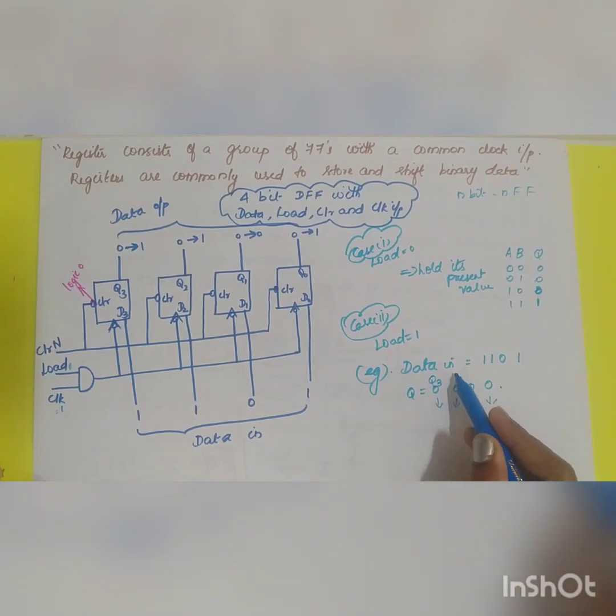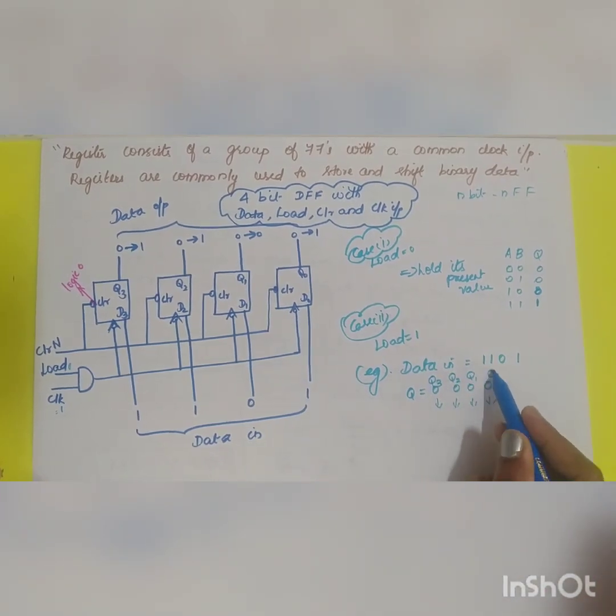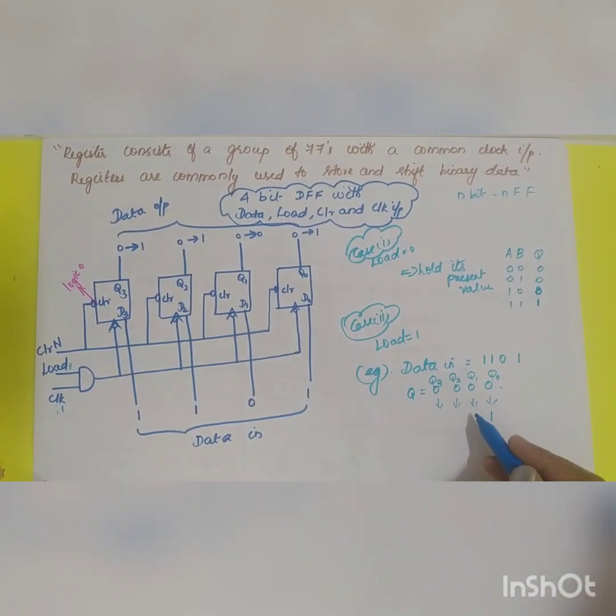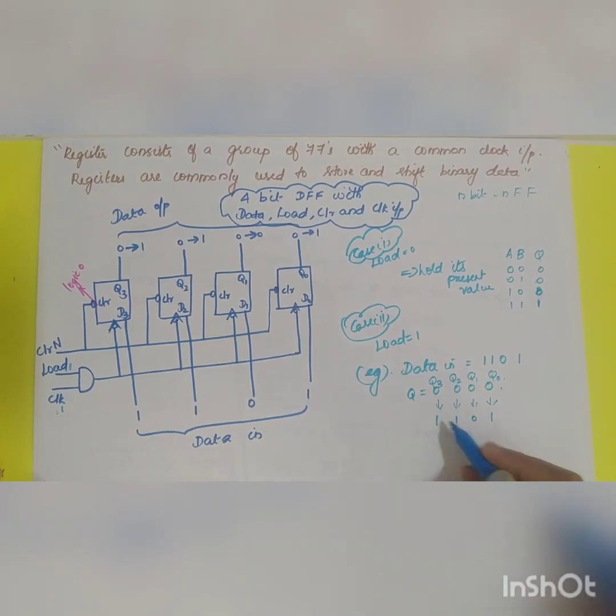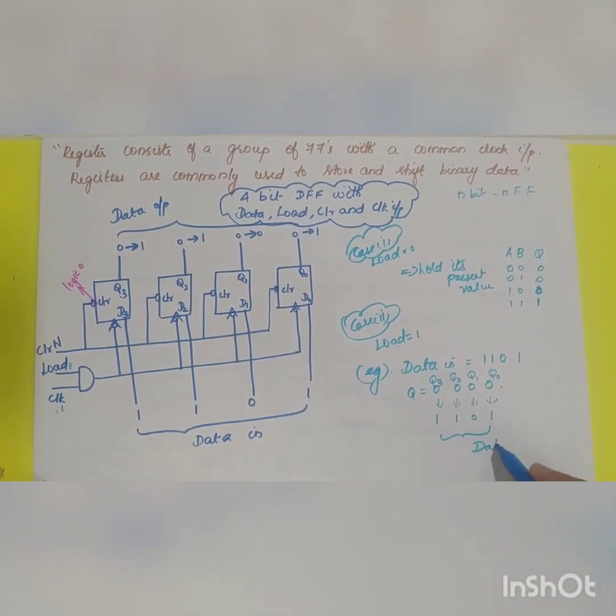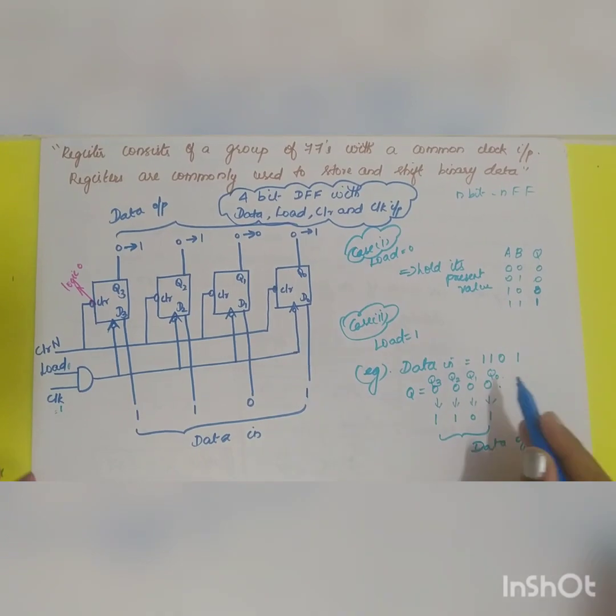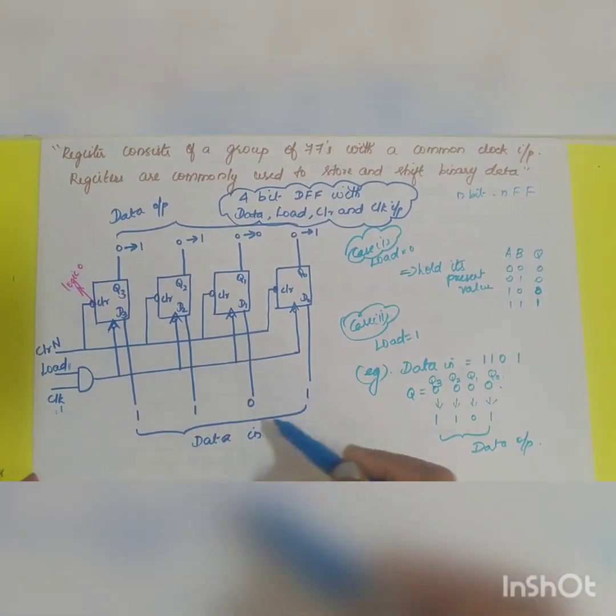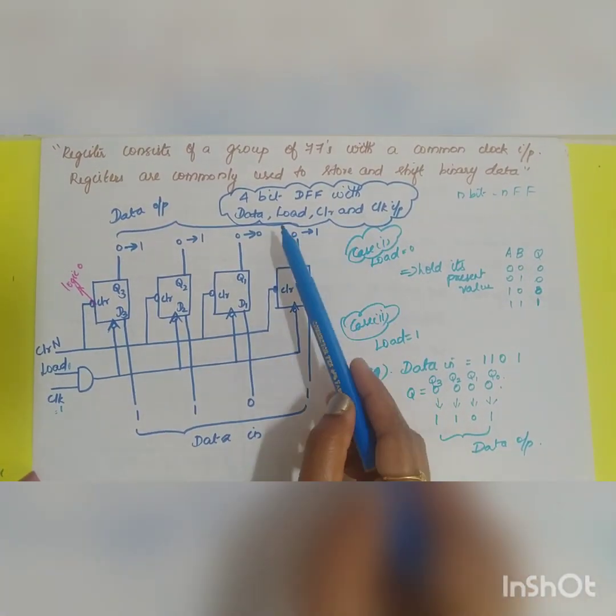So this will be Q3, Q2, Q1, Q0. It will be shifting to 1 0 1 1. This will be your data out. So this is your simple operation of your 4-bit data flip-flop with data,